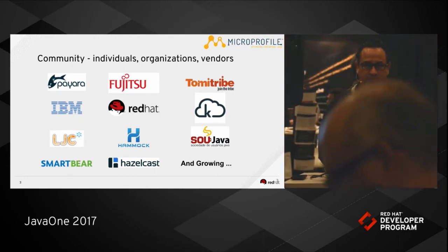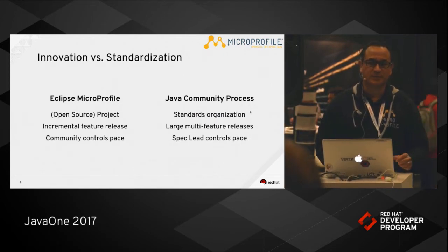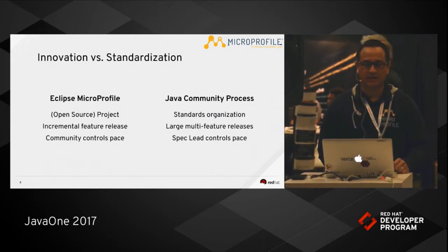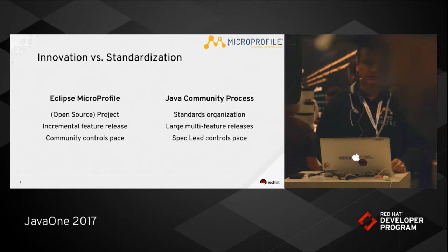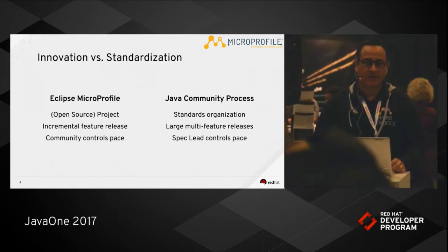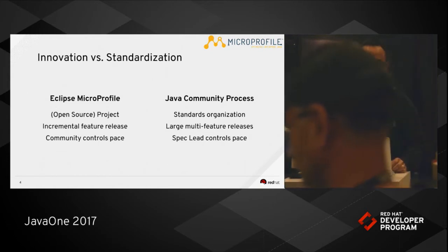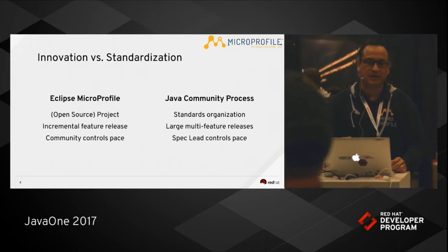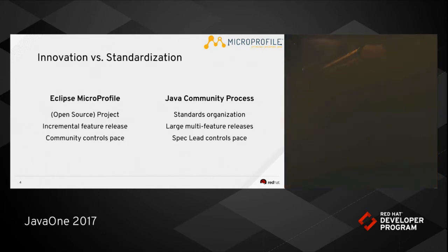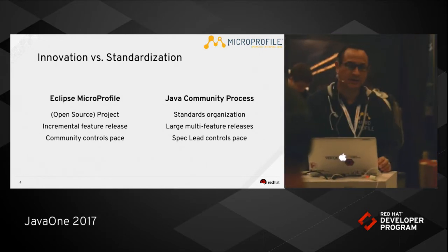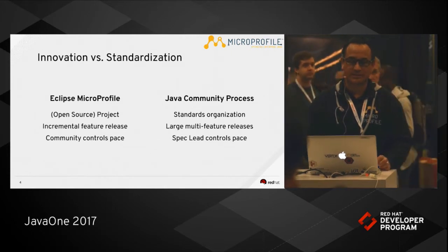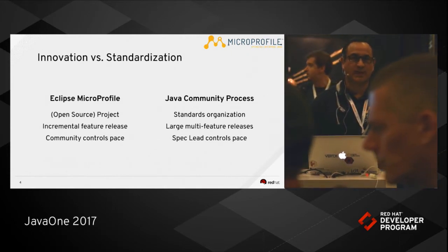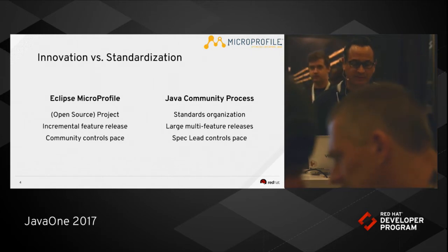I get this question often: what is the difference between Eclipse MicroProfile and the JCP process for Java EE? Well, first of all, Eclipse MicroProfile is an open source project. It has a time-boxed release schedule and it focuses on incremental feature releases, and the pace is controlled by the community. On the other hand, the JCP is a standards organization. It has large multi-feature releases, and the spec lead controls the pace of each specific project within the JCP.